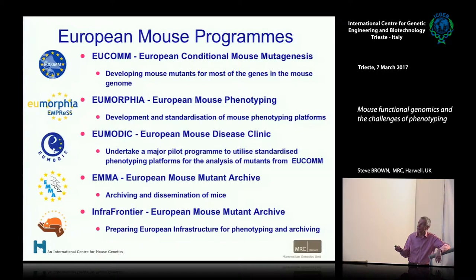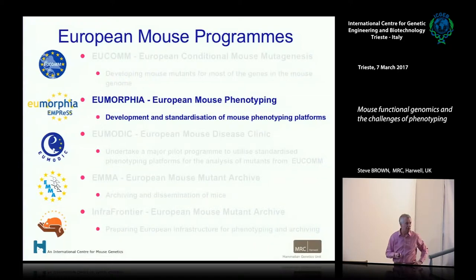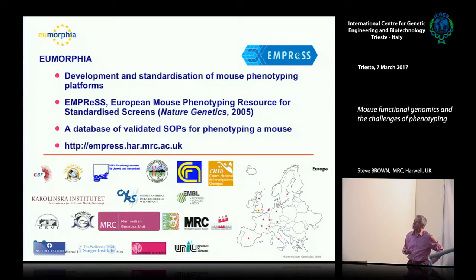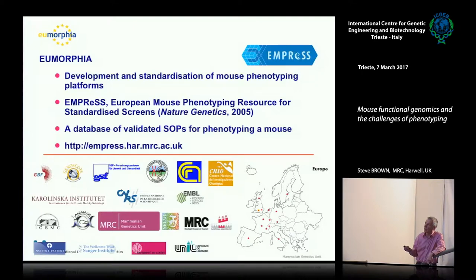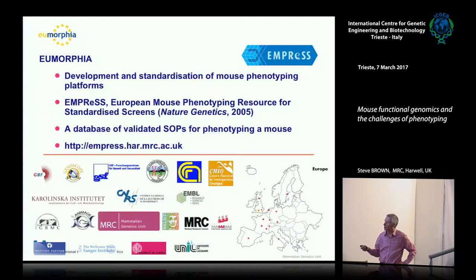Eumorphia — European Mouse Phenotyping — was for the development and standardization of mouse phenotyping platforms. We spent five years developing a whole suite of standardized mouse phenotyping platforms, and we tested that standardization. We validated them across different centers in Europe. These standardized phenotyping screens were published in a database called EMPRESS in Nature Genetics about 10 years ago, leading to a database of validated SOPs for phenotyping a mouse. It was a collective effort of research centers all around Europe, including here in Italy, Monte Rotondo in Rome.